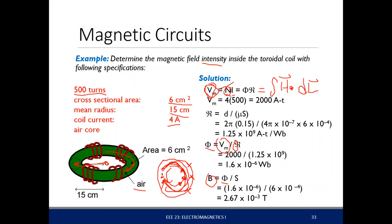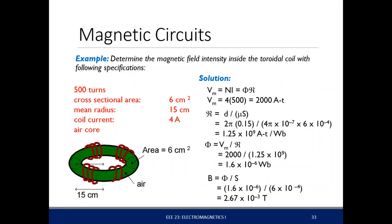That enclosed current is equal to N times I. We know the number of turns, and therefore we know how many times the current flows within the inner radius. The integral of H·dl equals N times I — that is the magnetic potential. So the magnetic potential is 4 amperes times 500 turns, which equals 2000 ampere-turns.